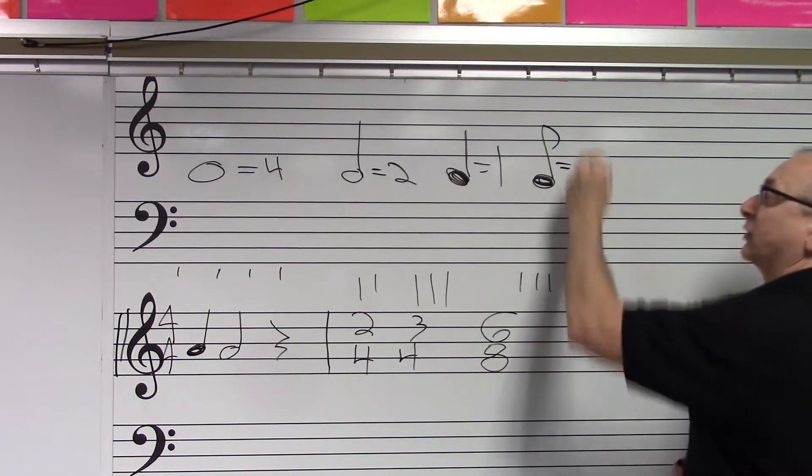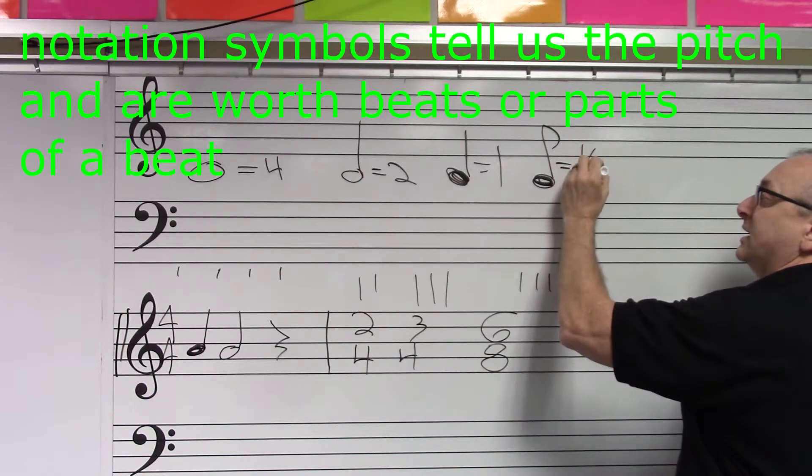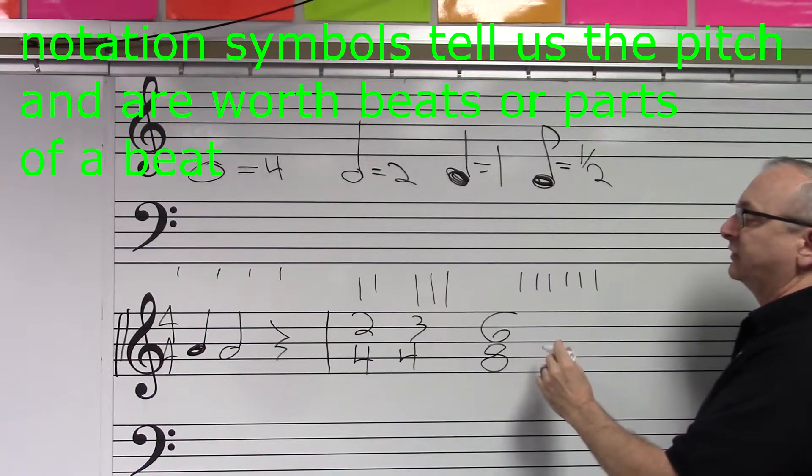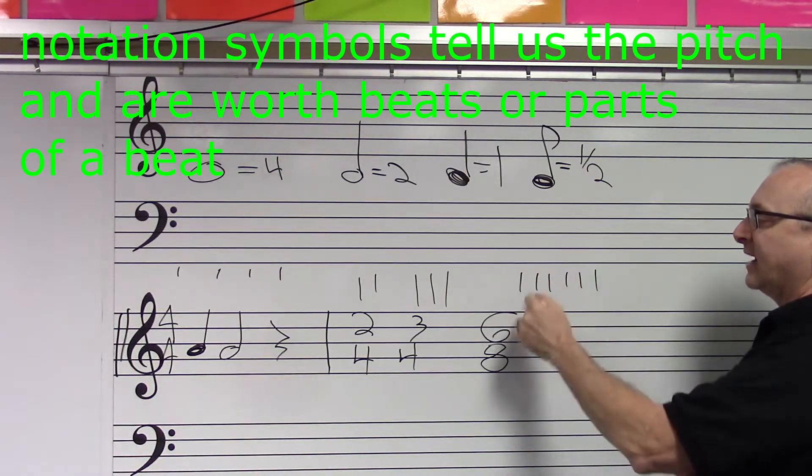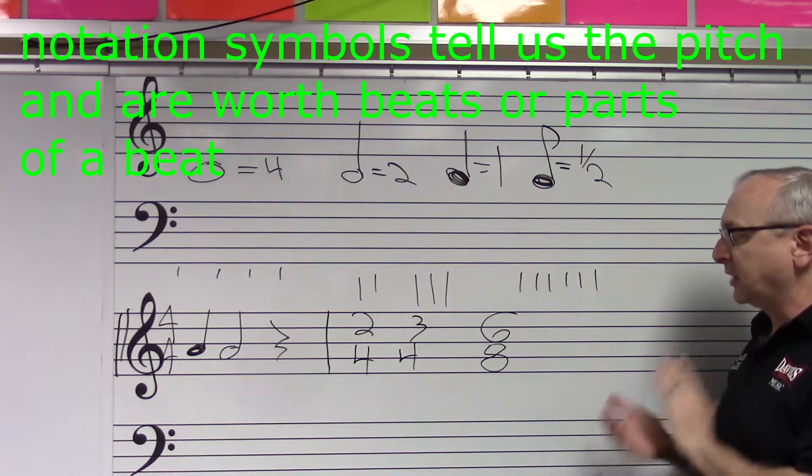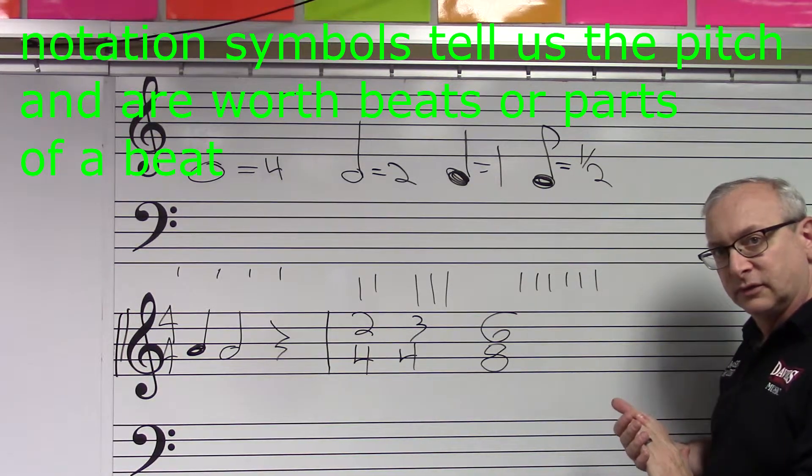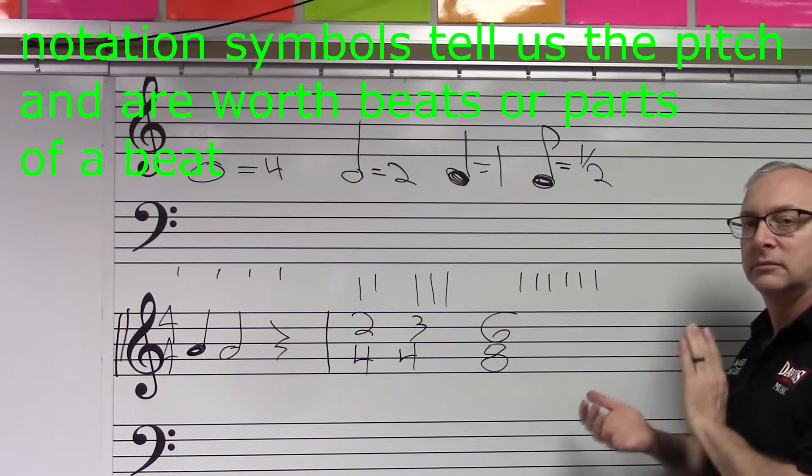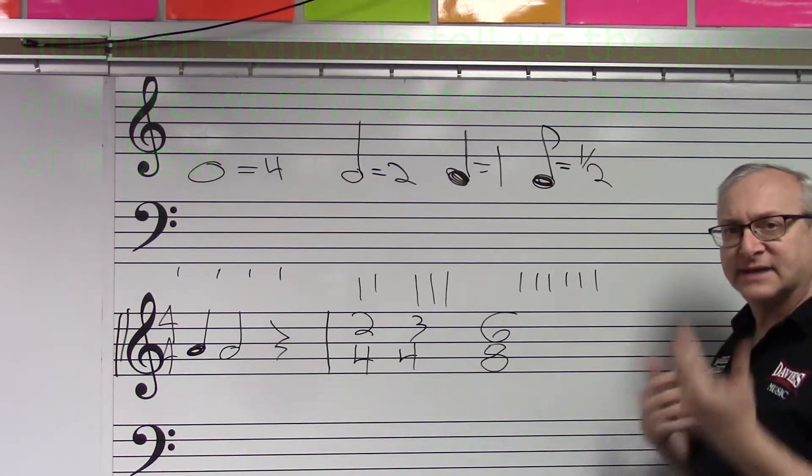Now the eighth note, of course, is worth half a beat. So, in a sense, we have six pulses: one, two, three, four, five, six. And that's how we would count it.